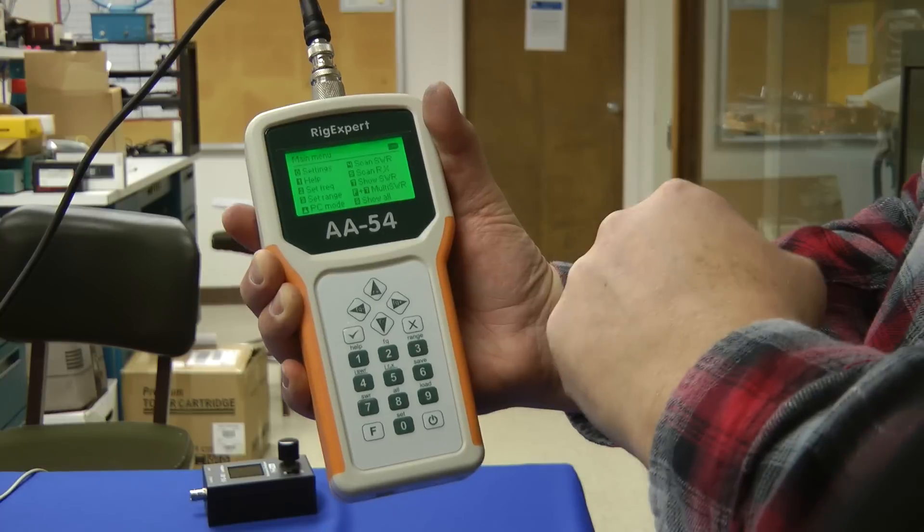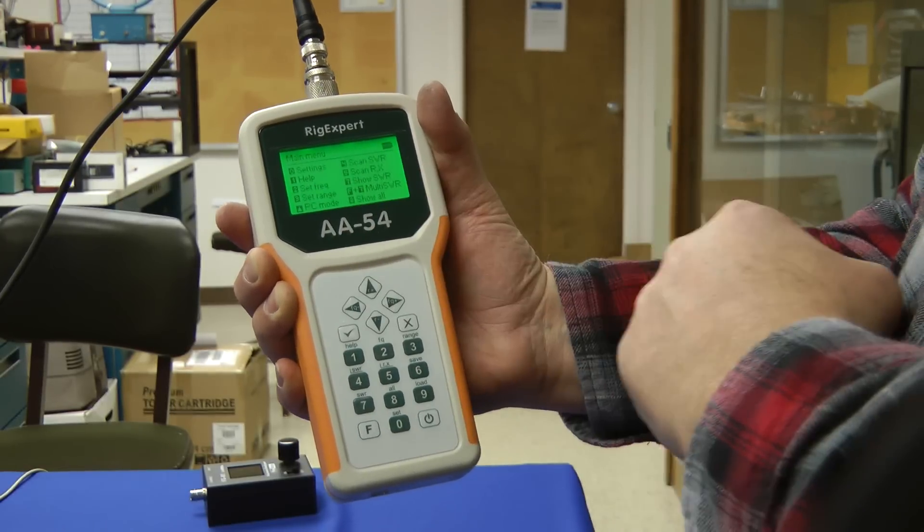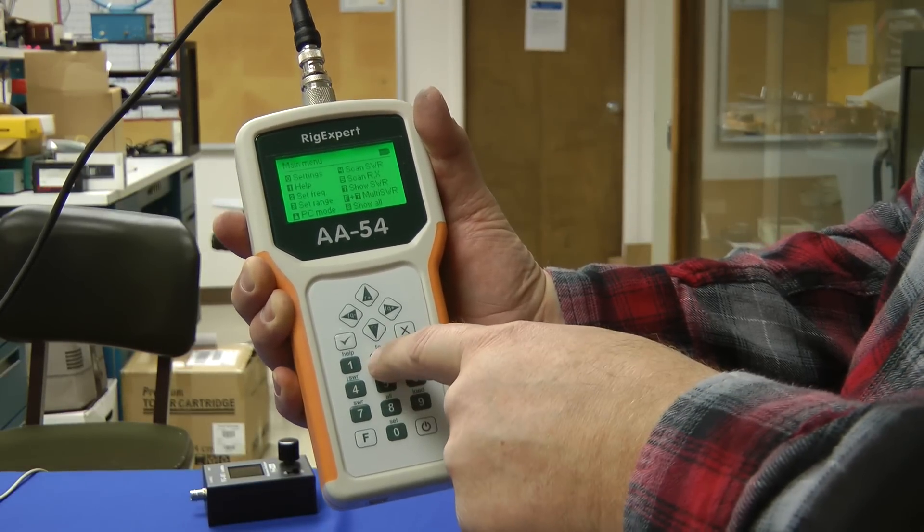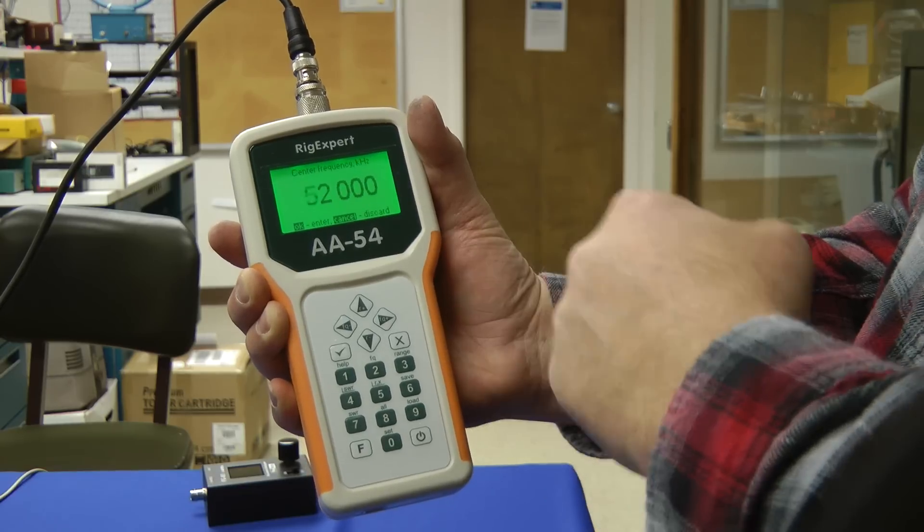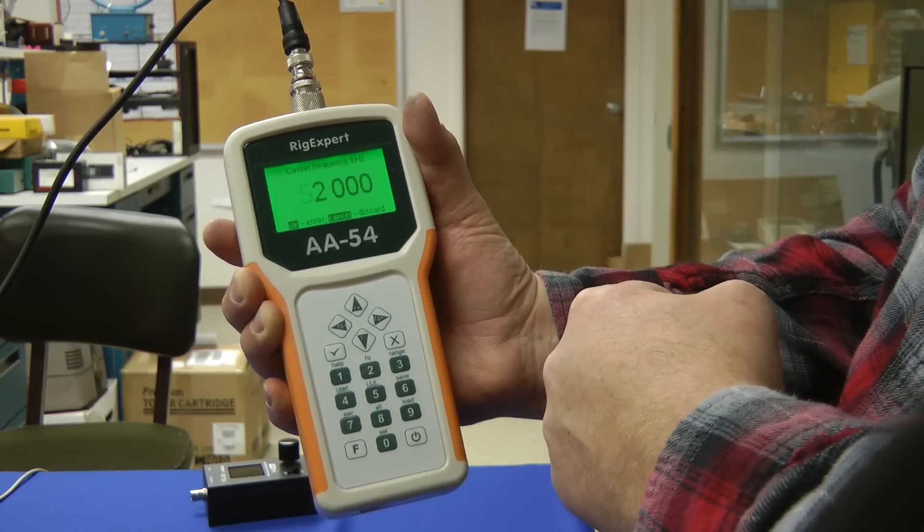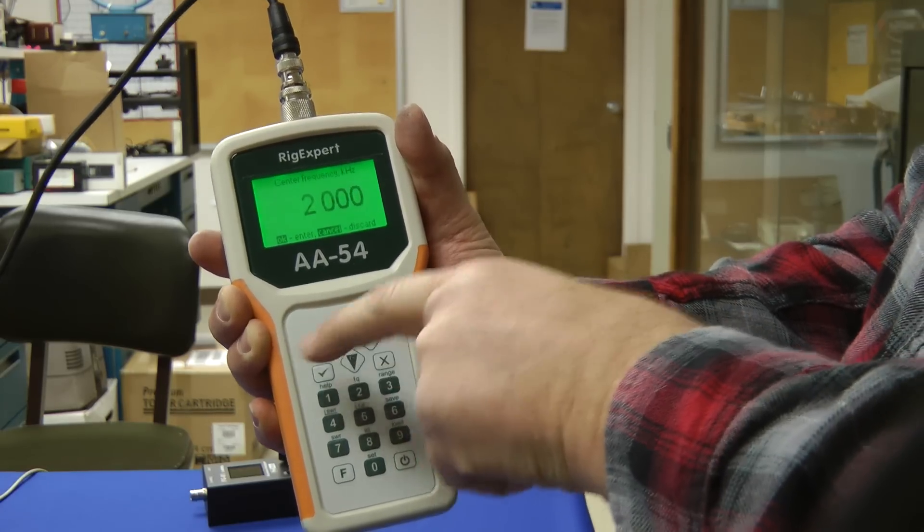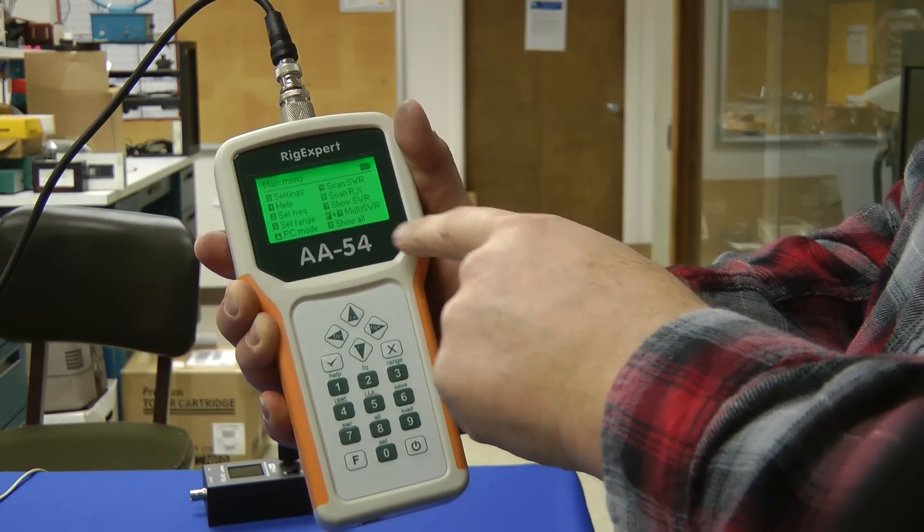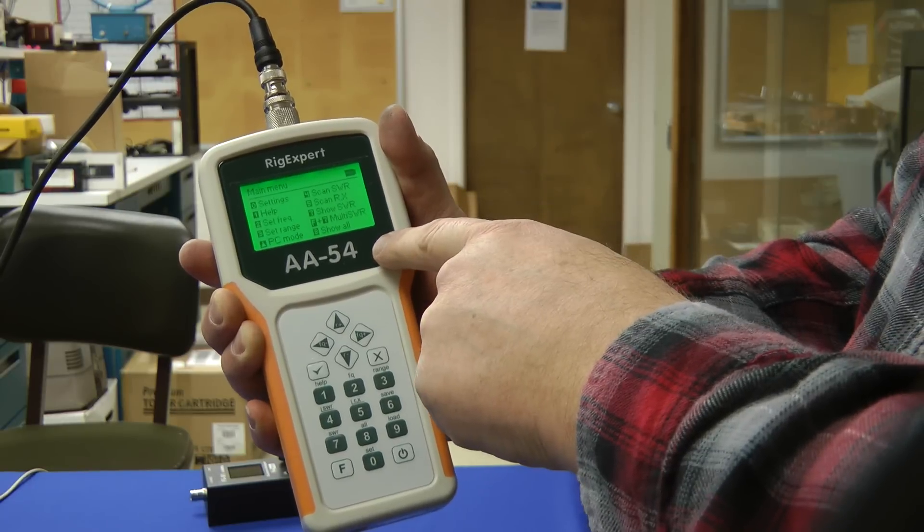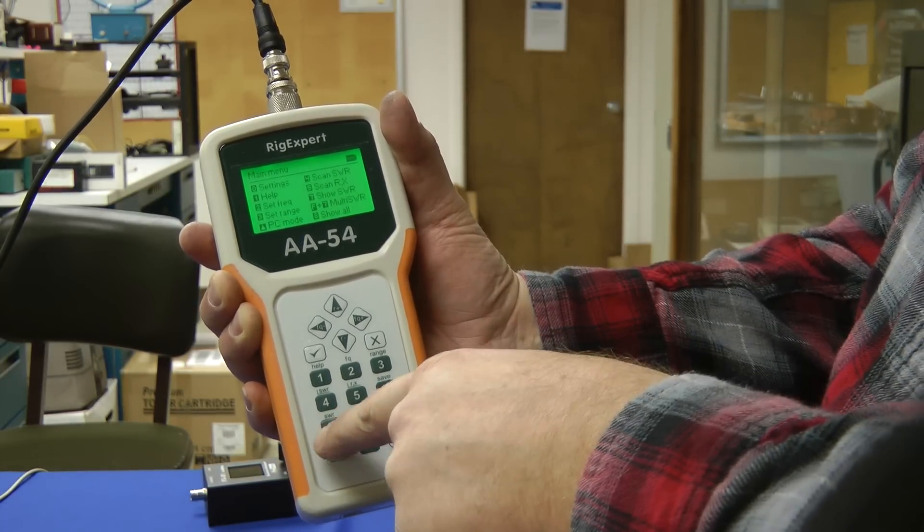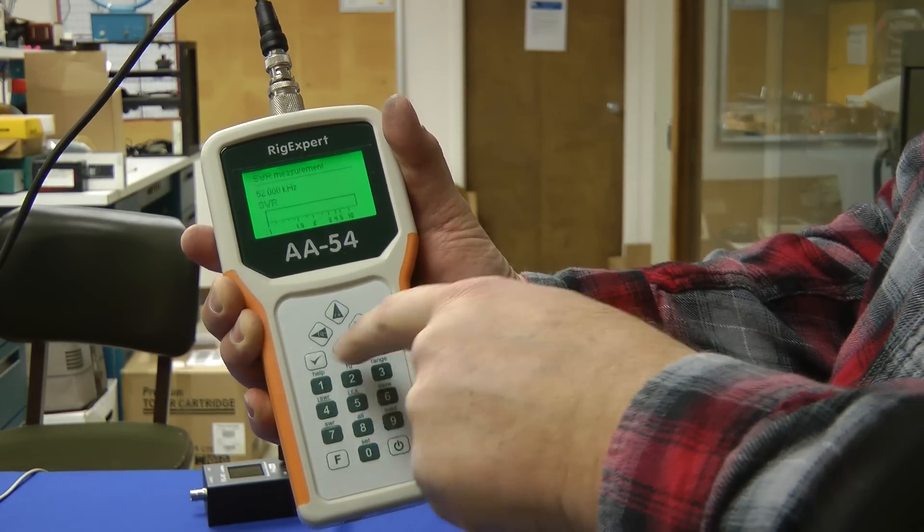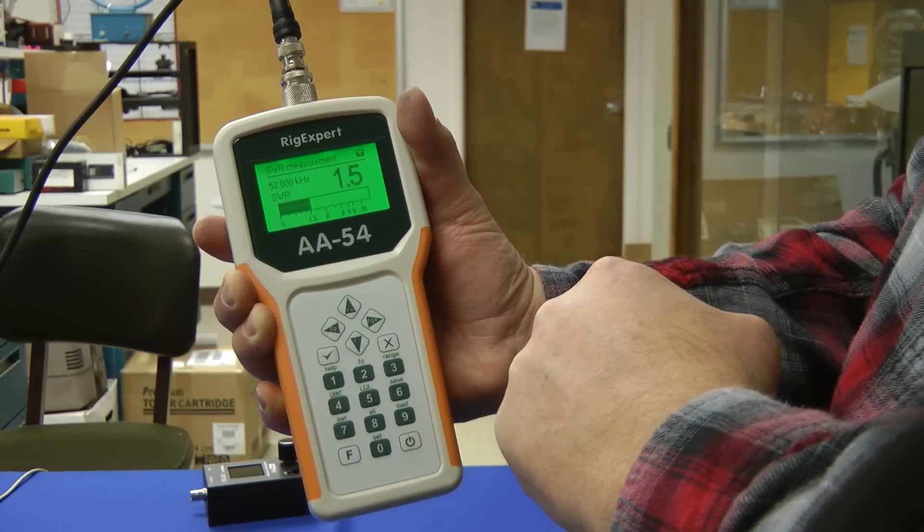Here's your main menu. I'm going to first set the frequency. So I'll hit number two. It's set for 52 megahertz. Let's take a look at that six meter antenna on the roof of HQ. I'll say that's okay by pressing the check mark. Now I'll pick what I want to see. Let's look at the SWR. I'll hit seven, and then I'll hit the check mark again. And there it is, 1.521.